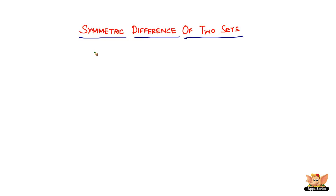In this video, let us look into another operation on sets called the symmetric difference of two sets. Simply put, the symmetric difference of two sets is the combination or union of A minus B and B minus A, as we saw in the previous video. Let's look at the formal definition.